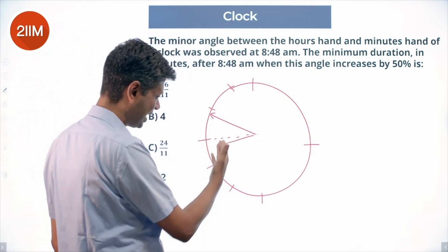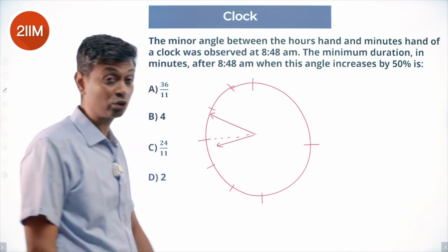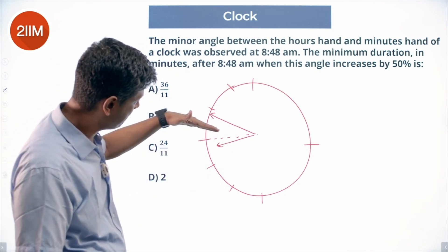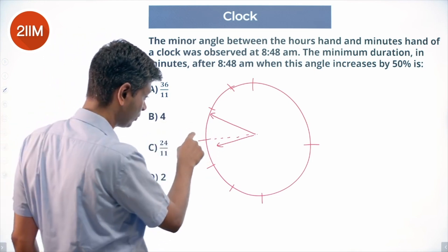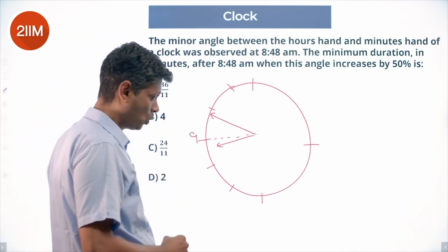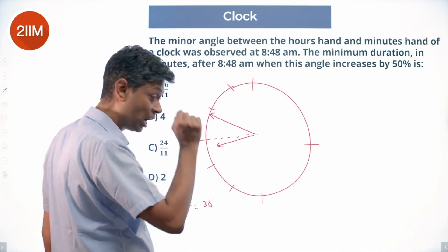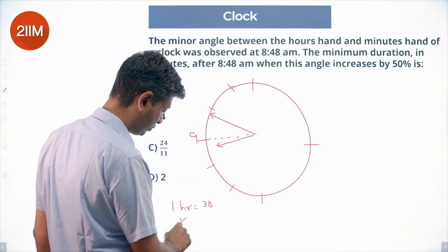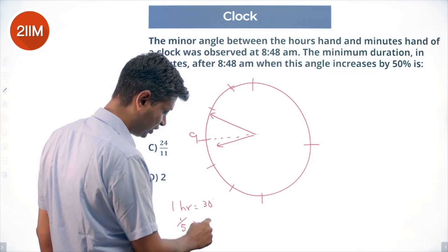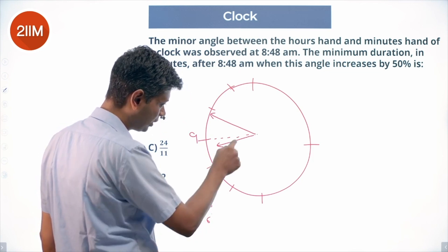8:48. 48 is four-fifths of an hour, so one-fifth of an hour below 9 o'clock. This is 9 o'clock. One hour is 30 degrees for the hour hand. One-fifth of an hour is 6 degrees, so this angle is 6.